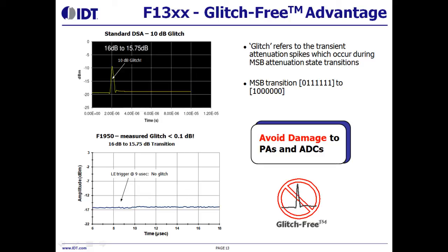This shows that customers using competing solutions need software and hardware protection. However, the IDT DSA F9050 shows only 0.1 dB glitch, meaning you do not need PA and ADC protection anymore — making your DPD system design much easier.